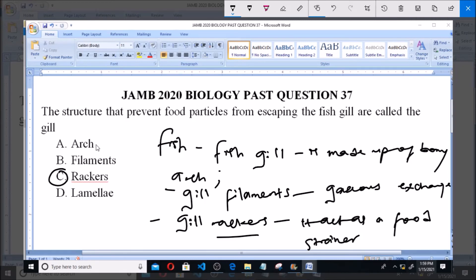while the arch is the gill itself bearing the filaments and the rakers. So option C, which is gill rakers, is the correct answer to the question. Thank you and be sure to subscribe to the channel for more videos and past questions.